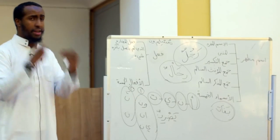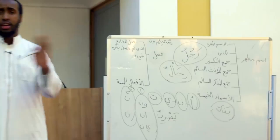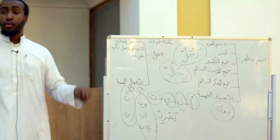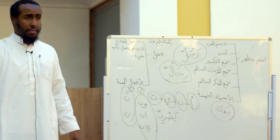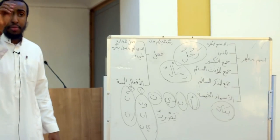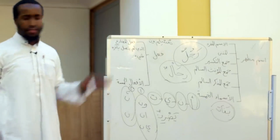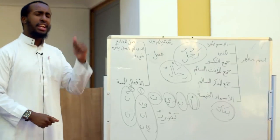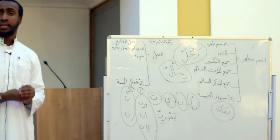That's the chapter we're doing — we're not studying mabni, so we won't entertain what's mabni. The Fi'l al-Mudari' that has Nun al-Niswa or Nun al-Tawkid connecting to it goes with its brothers: the Fi'l al-Madhi and the Fi'l al-Amr — those are also mabni. That's the road it goes down.